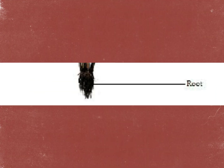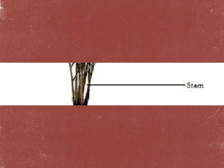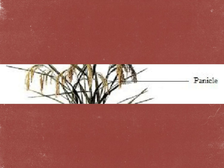The roots anchor the rice plants in the soil and absorb water and nutrients. Like other Gramineae, the root system of rice is relatively shallow, especially under flooded conditions. The stem's main function is to transport water and nutrients and to bring air to the roots.